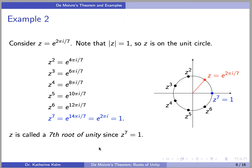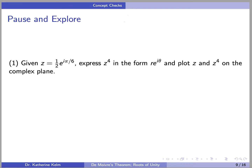In general, an nth root of unity is a number that, when you take it to the nth power, you get 1. Here is a concept check — pause the video and work it out yourself. Given z = (1/2)·e^(iπ/6), express z^4 in the form r·e^(iθ), and plot z and z^4 on the complex plane.